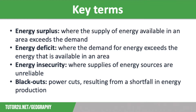There are some key terms that are essential to this unit. Energy surplus is where the supply of energy available in an area exceeds the demand. The opposite is energy deficit, where the demand for energy exceeds the energy that is available in an area. We then have energy insecurity, where supplies of energy sources are unreliable — for example, they may be interrupted, or prices may fluctuate, and there is the potential for blackouts. Blackouts are power cuts resulting from a shortfall in energy production.